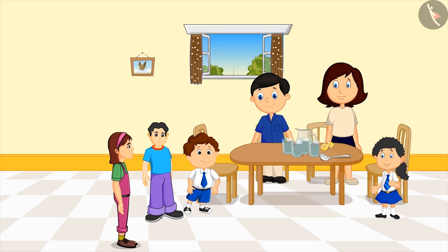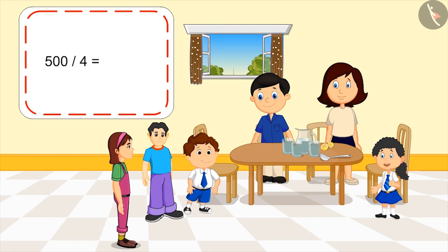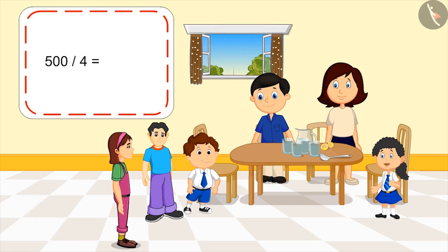Meanwhile, two friends of Pinky arrive. We should give lemonade to our friends too. Why don't we share a part of our lemonade with them? Look, in total we have two glasses of lemonade. Then how much lemonade will we all get? As Mom explained, we have five hundred ml of lemonade. You mean half a liter? Yes, let's divide five hundred by four. Kids, you can pause the video and think about the answer. We all will have one hundred and twenty-five ml of lemonade.